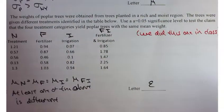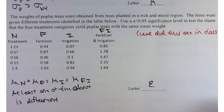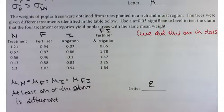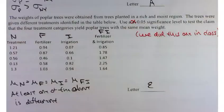Weights of poplar trees were obtained from trees planted in a rich and moist region. Use a 5% significance level to test the claim that the four treatment categories yield poplar trees with the same mean weight. Did you recognize that we actually did this one in class? I'm not really trying to trick you.